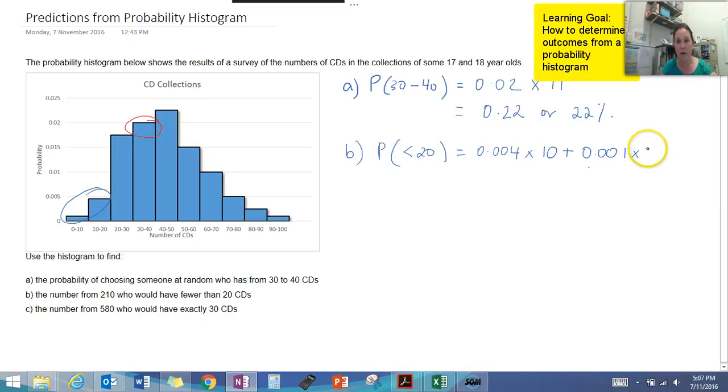We put that in our calculator and that is going to equal 0.014 or 1.4%. So the probability of having less than 20 CDs is 1.4%.